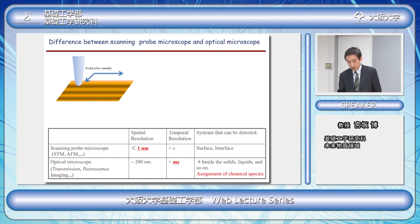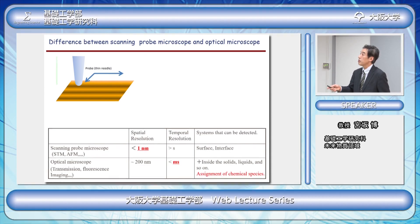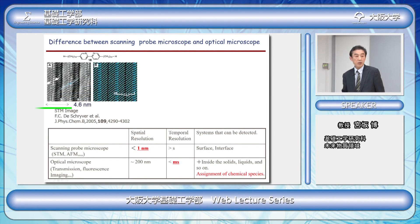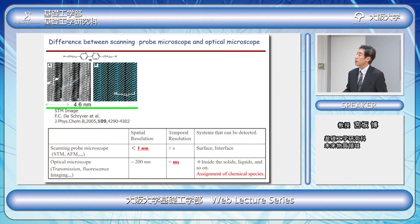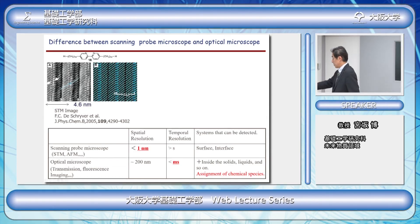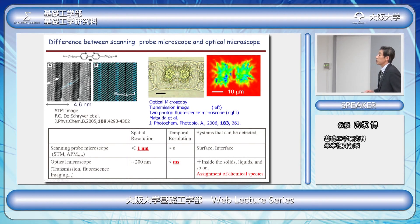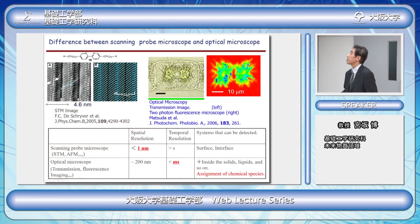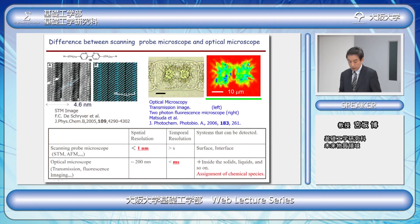This slide shows one of another type of microscopes called the scanning probe microscope. In this case we use a tiny, thin needle that scans on the surface of the material, and we could get high spatial resolution. This is one of the examples obtained by the scanning tunneling microscope — the molecules lining on the surface can be clearly seen. On the other hand, the optical microscope can get biological images, such as an image of a plant cell showing internal structure.